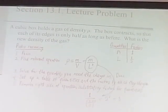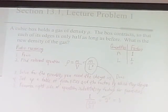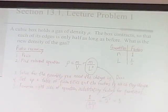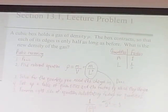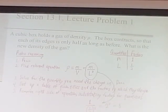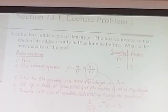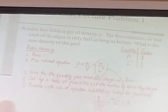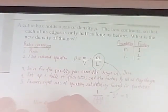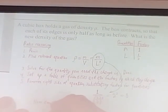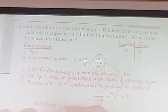Is eight the new density of the gas? No — eight is the factor by which the density changes. The new density is eight times the original density. So since the original density is rho, the new density is 8ρ.